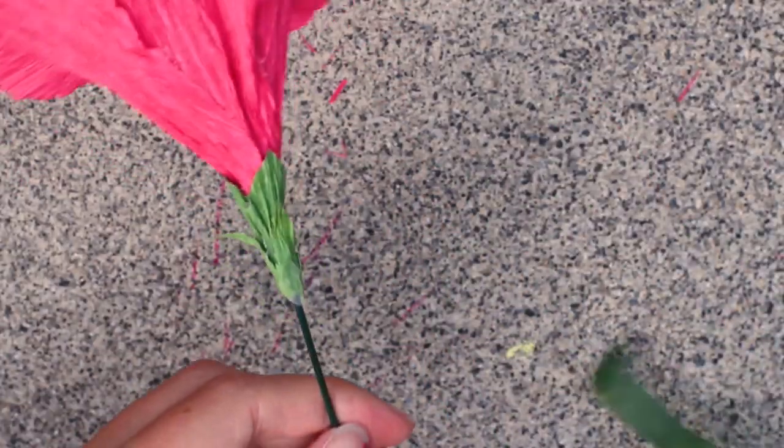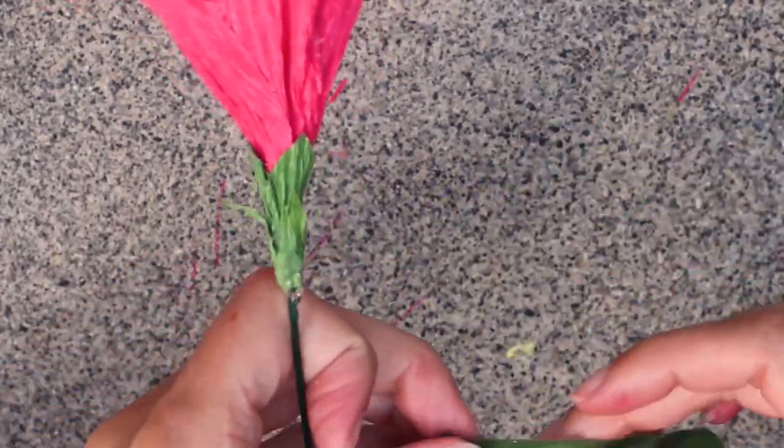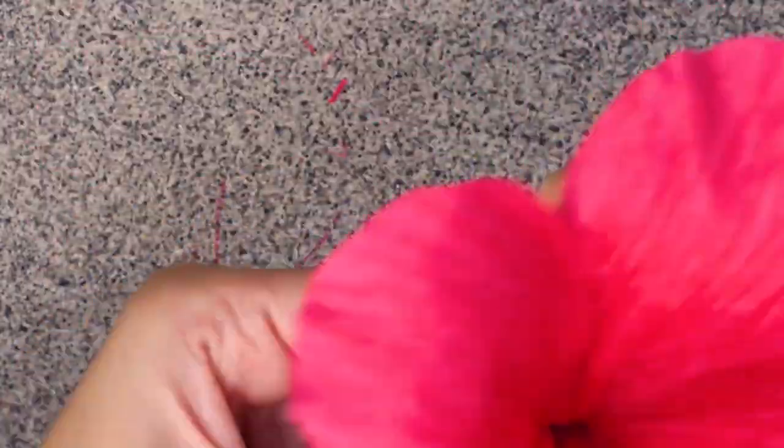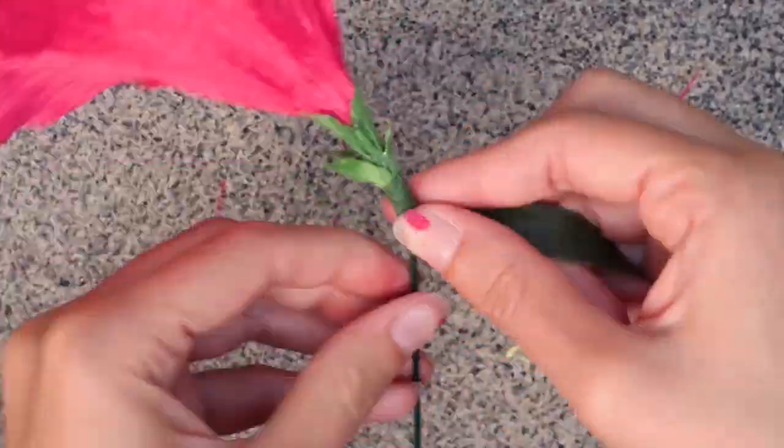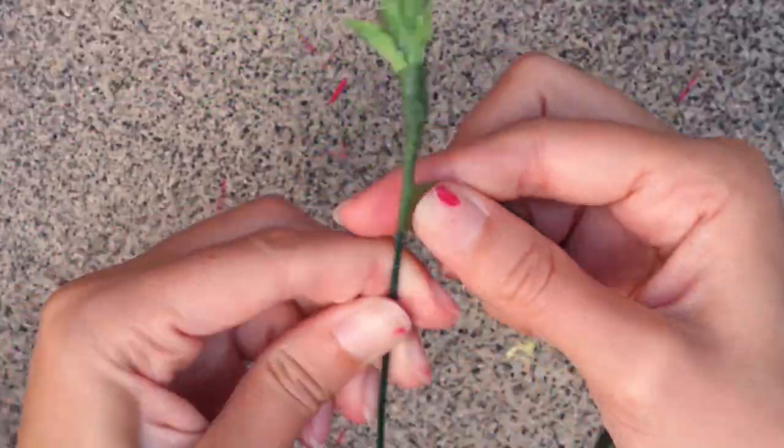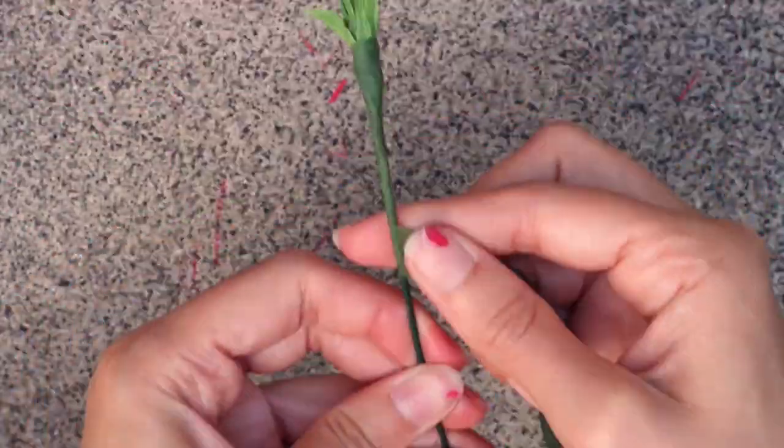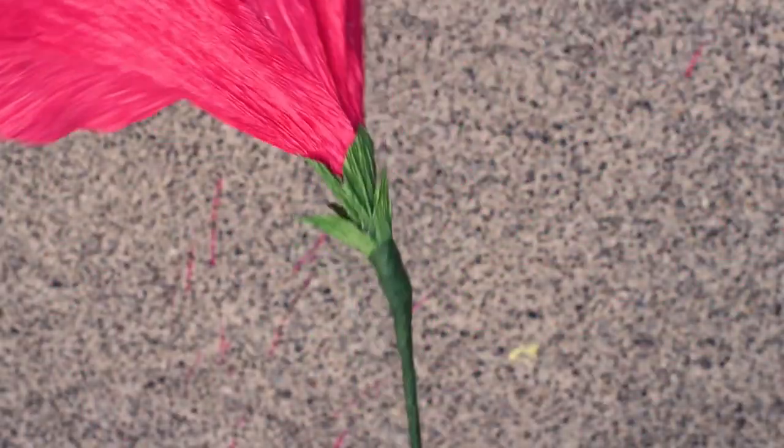Finally, I'm taking some green floral tape and I'll just be wrapping the entire stem with this. Or you can stop when you get close to the bottom. Just be sure to stretch this as you go. That helps it stick. Just wrap the entire length. And this is the finished flower. Feel free to add leaves if you'd like.